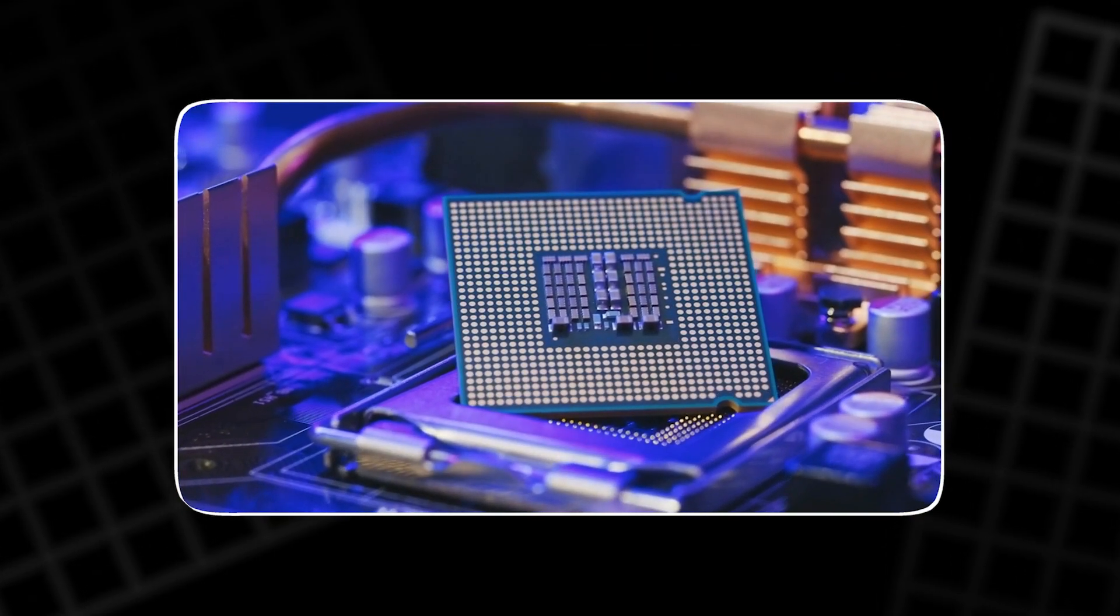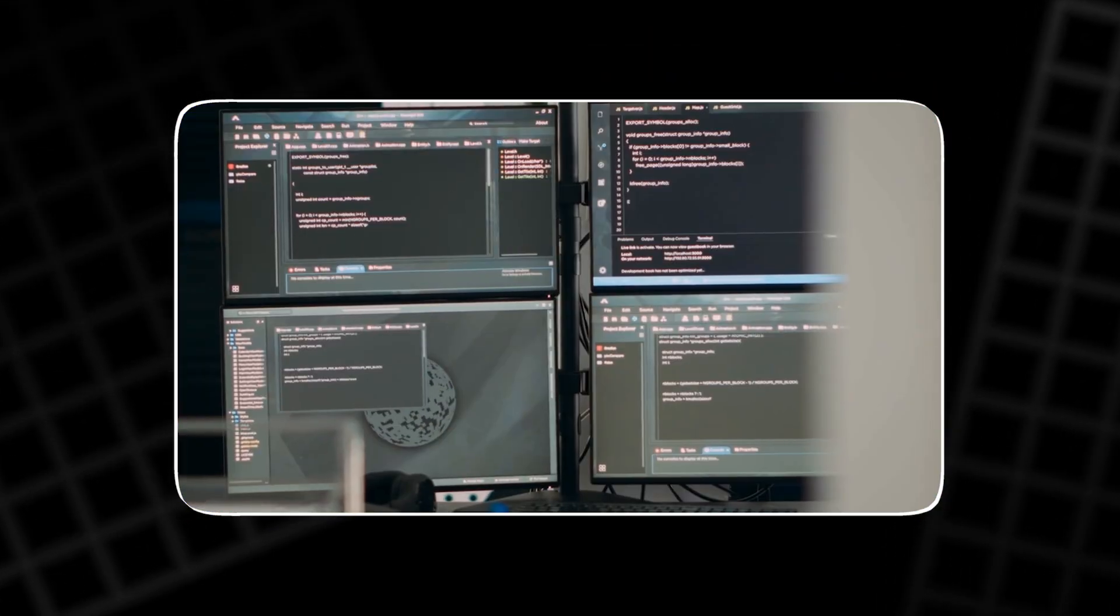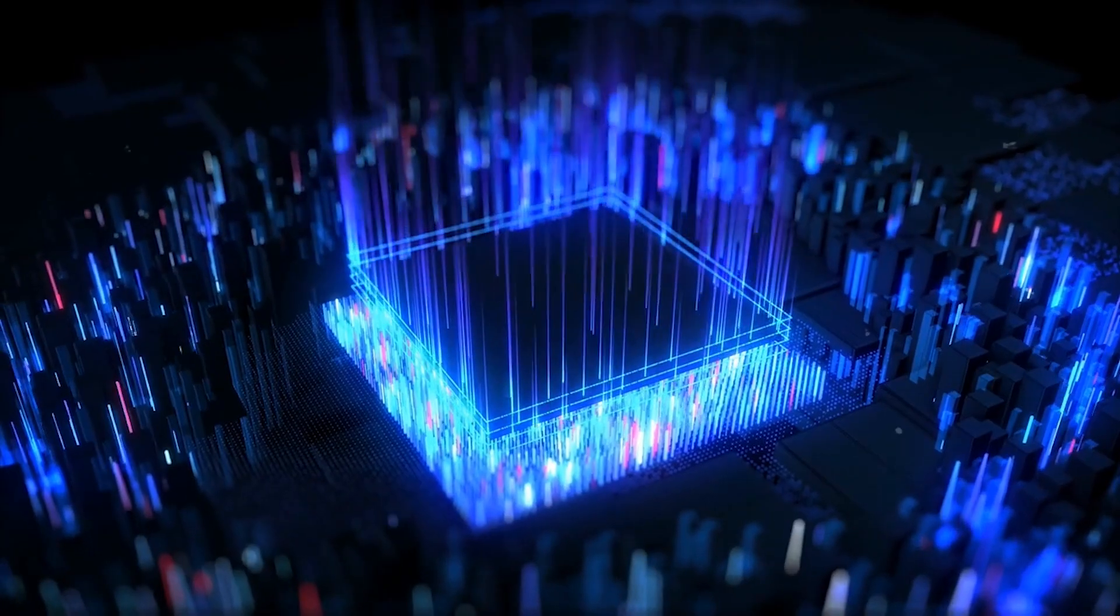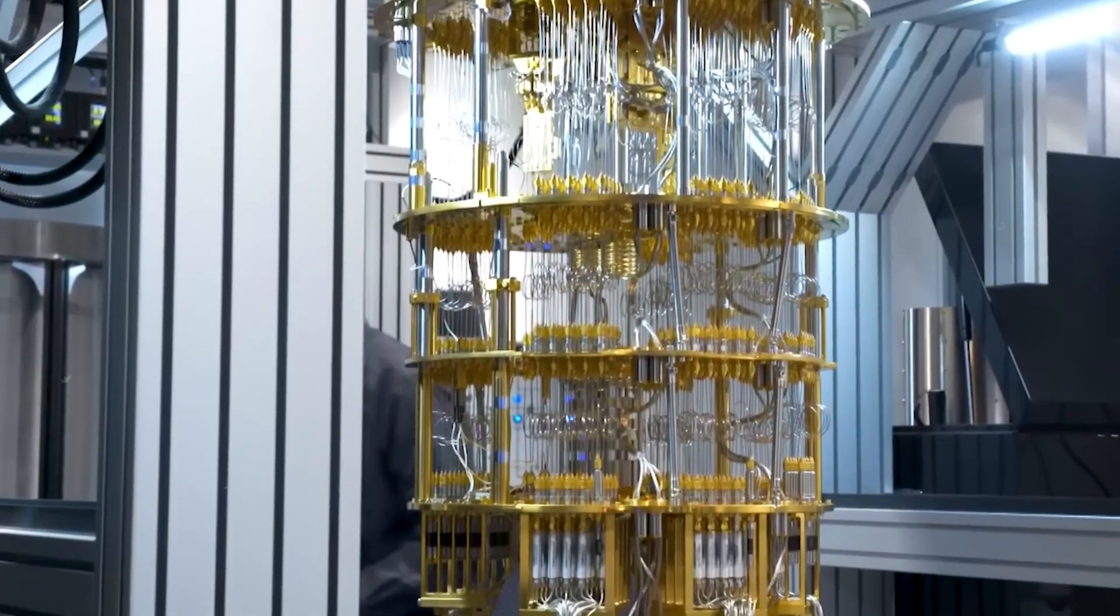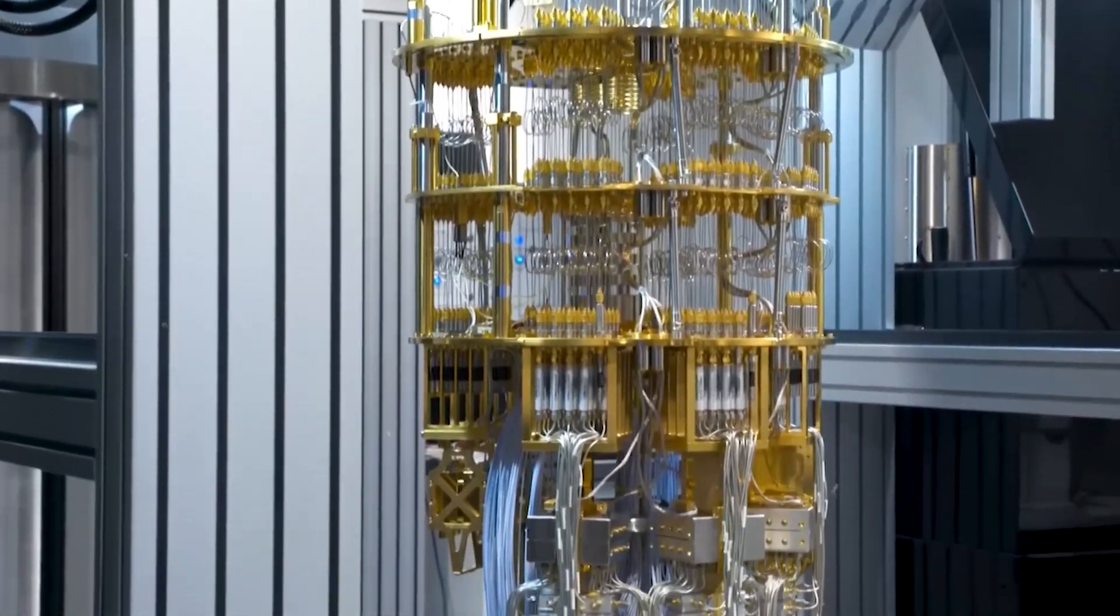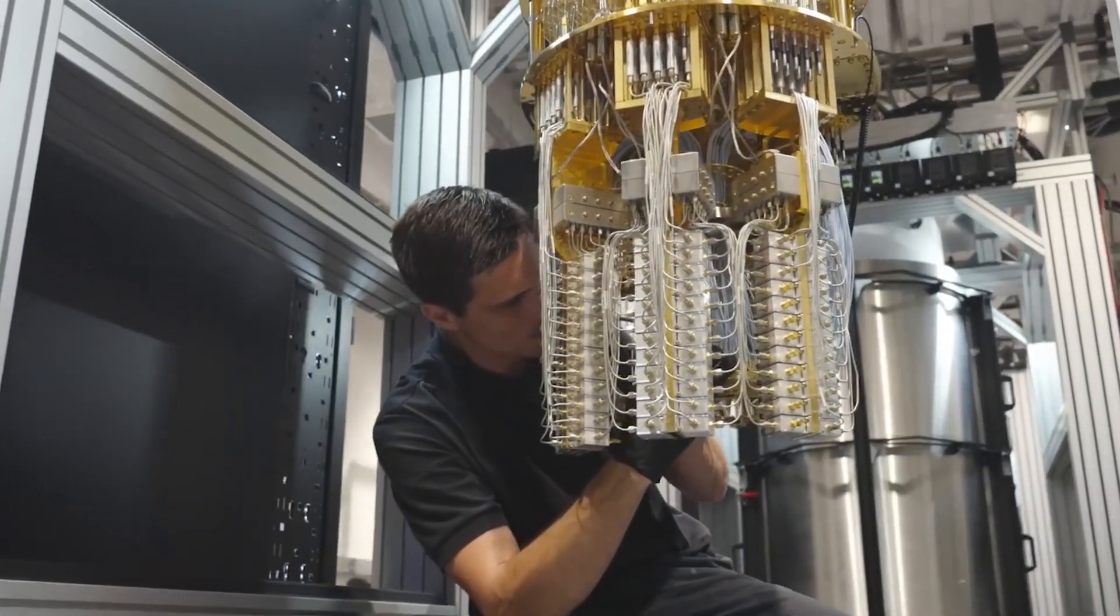Even though both types of machines still use chips, logic gates, and algorithms, the fundamental difference lies in their building blocks. Classical computers rely on bits, while quantum computers rely on qubits. And that difference changes everything.